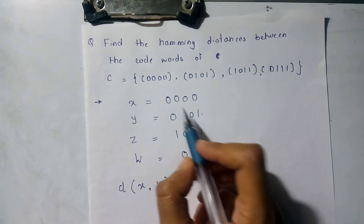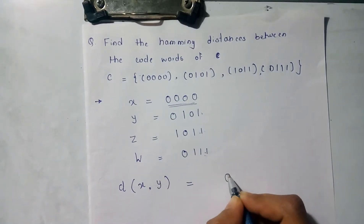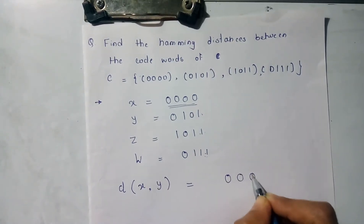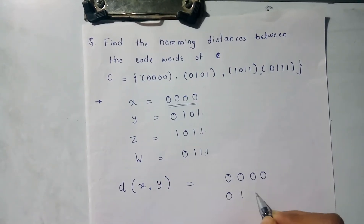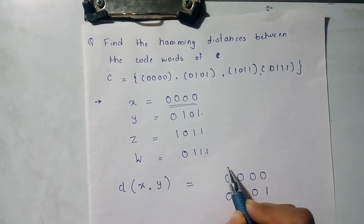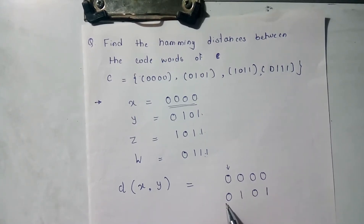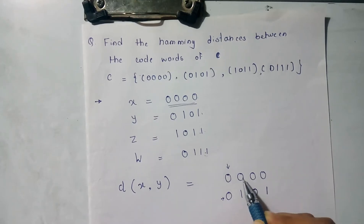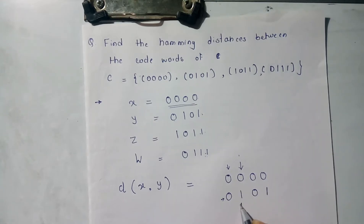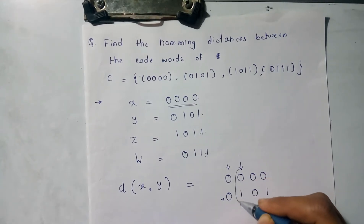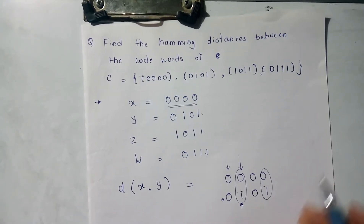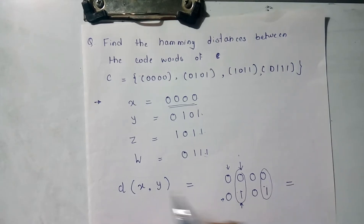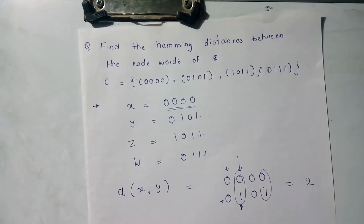The Hamming distance is determined by comparing bits. We sent codeword 0000 and received codeword 0101. In the first position we sent 0 and received 0 — same. In the second position we sent 0 but received 1 — different. Similarly for the fourth bit. Two bits are different, so the Hamming distance between x and y is 2.